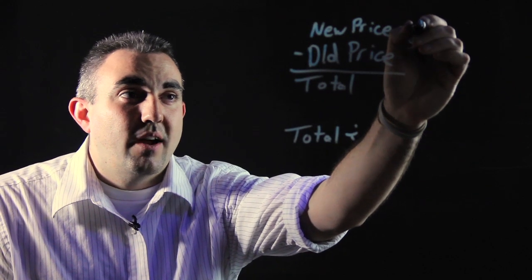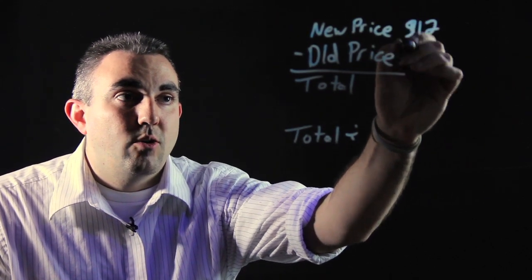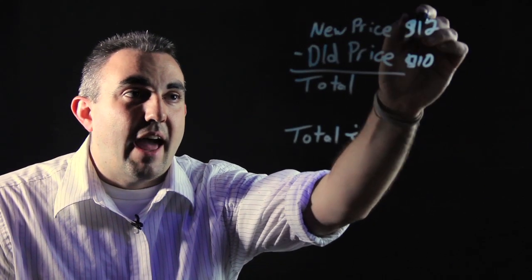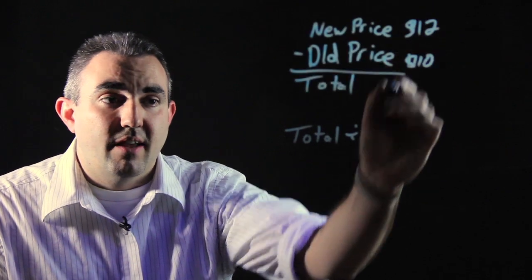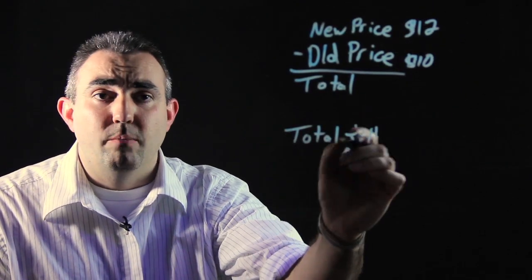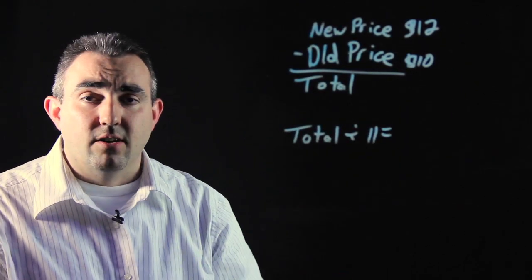So if the new price is $12 and the old price was $10, the average of 12 and 10 is 11. So you would divide the total by 11, and you would get an answer.